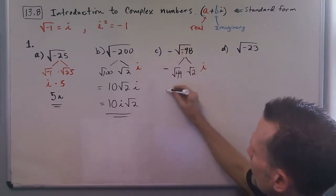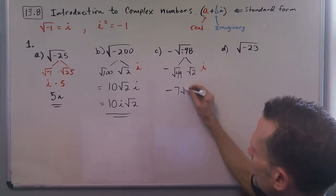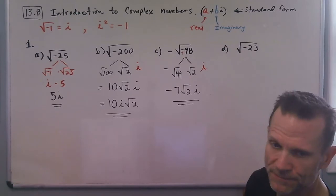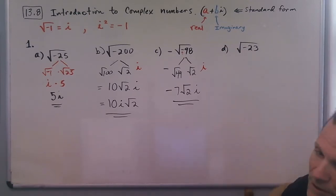And then don't forget your negative sign up front, so we have negative 7 square root of 2i.